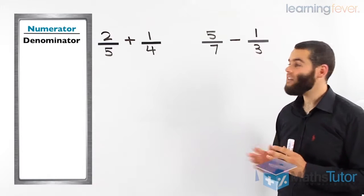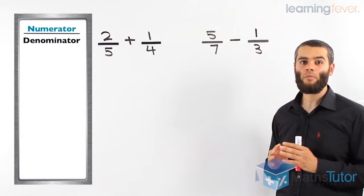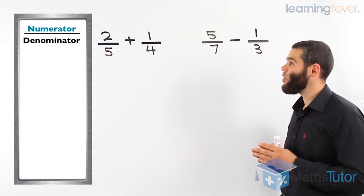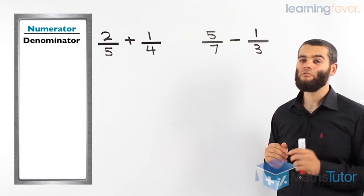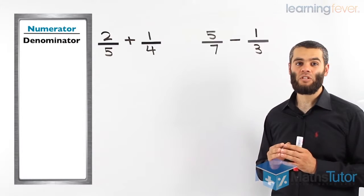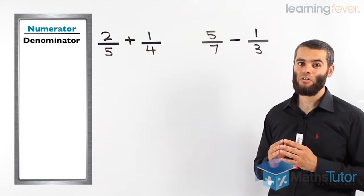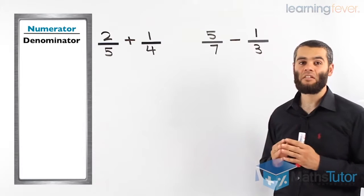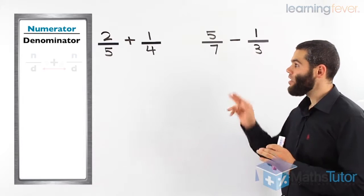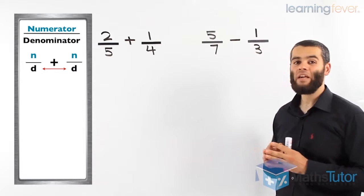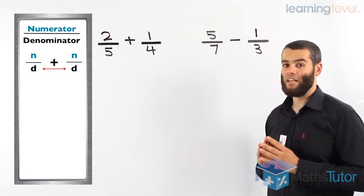First, we need to understand that we have the numerator and the denominator. The numerator is the number on top of the fraction bar, and the denominator is the number on the bottom of the fraction bar. When we have a fraction added to or taken away from another fraction and the denominators are different, we have to make them the same. The first step is to multiply the denominators together, as shown by the red arrows.